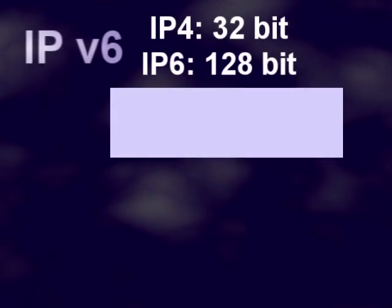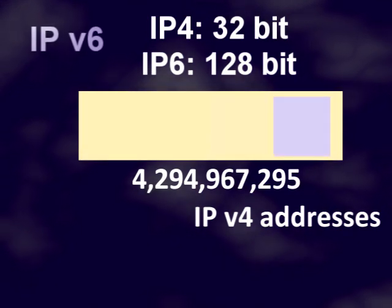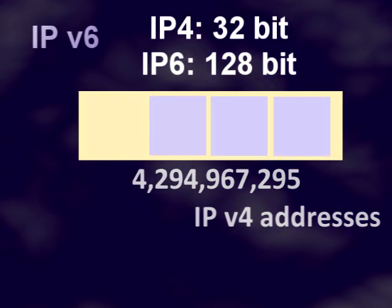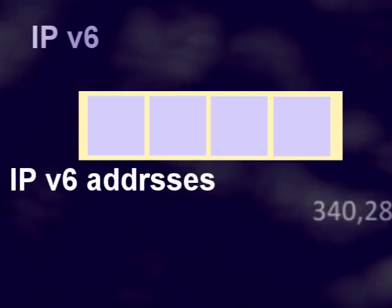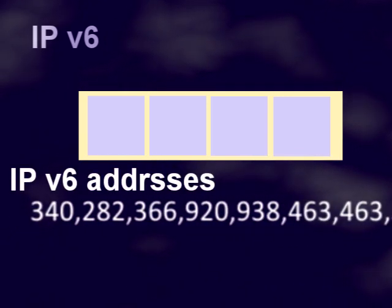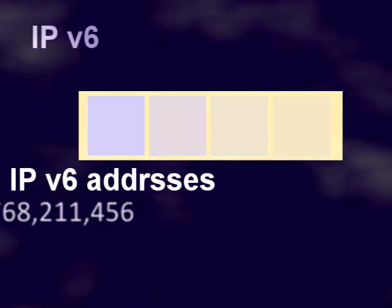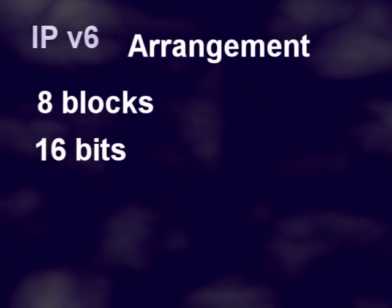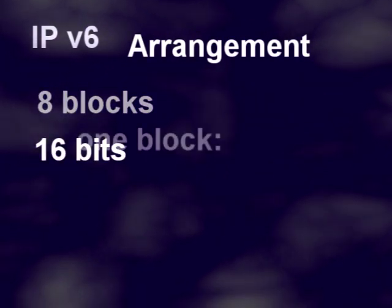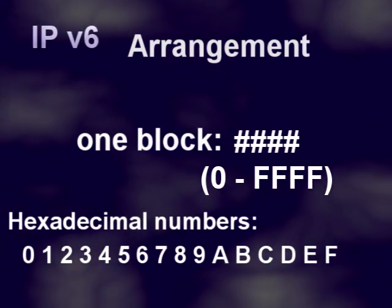Where IP version 4 is a 32-bit number with a maximum of 4.3 billion addresses, IP version 6 is 4 times the size of IP version 4, being a 128-bit number, with a maximum of 3.4 times 10 to the power of 38 addresses. An IP version 6 address is arranged as 8 blocks of 16 bits, with each block readable as 4 hexadecimal digits.